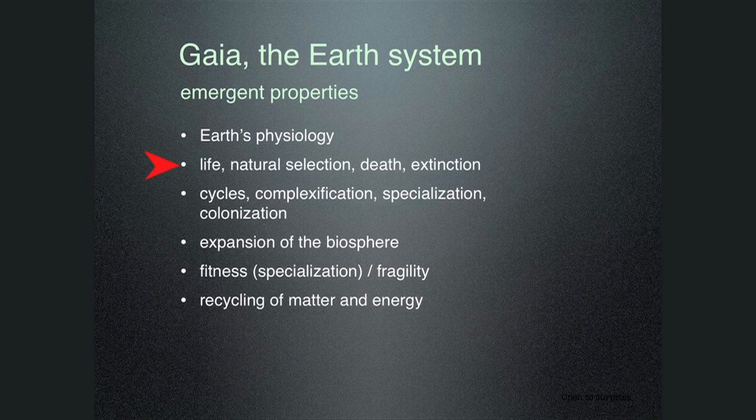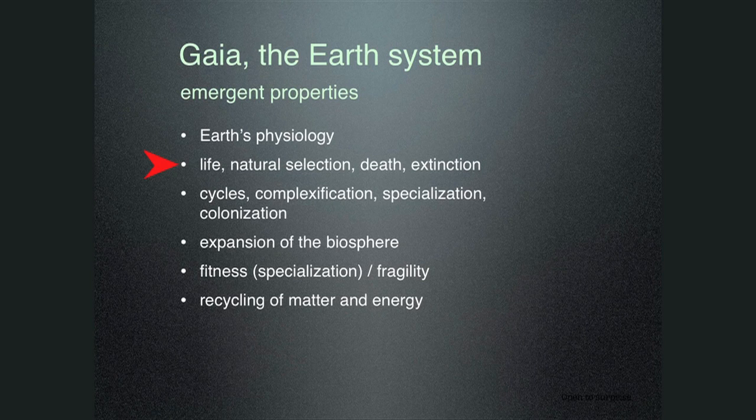Some people have said that if life really regulated the planet for the benefit of life, it would produce the things it needs so that there wouldn't be any death. But the problem is that the planet can't support all the progeny of even one species. There are bacteria that divide every 15 minutes and in 36 hours they would engulf the planet if there were enough nutrients. So death is essentially a natural part of life and it's required for the system to work.